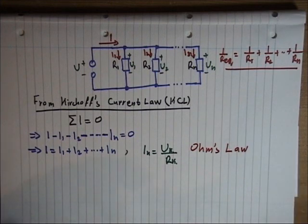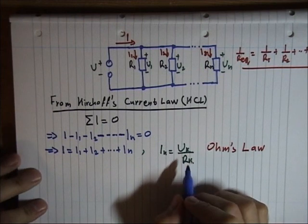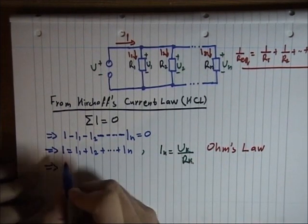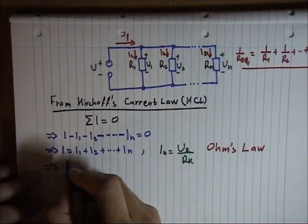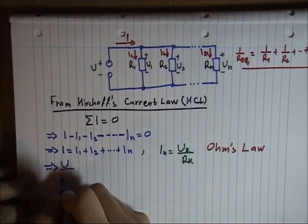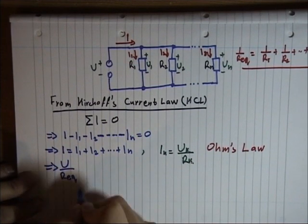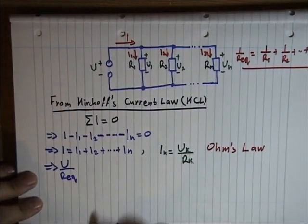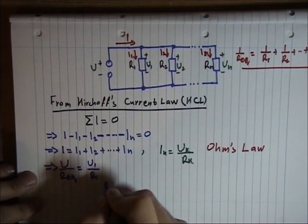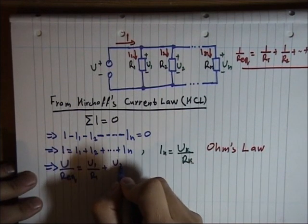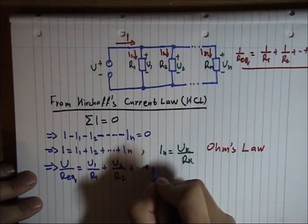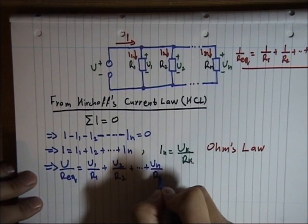So by substituting this law into our equation, we say that the voltage over the equivalent resistance of the whole network is equal to U1 over R1 plus U2 over R2 plus Un over Rn.